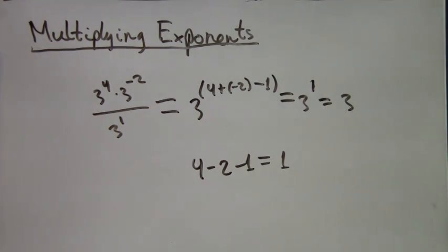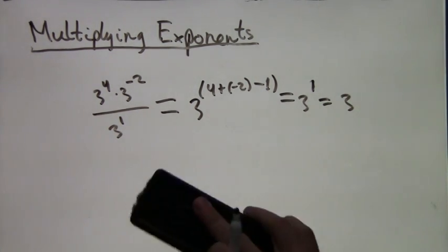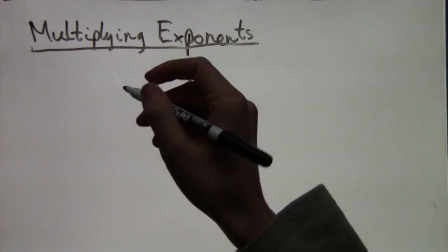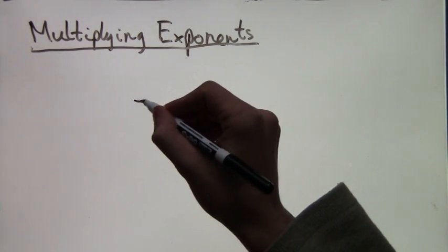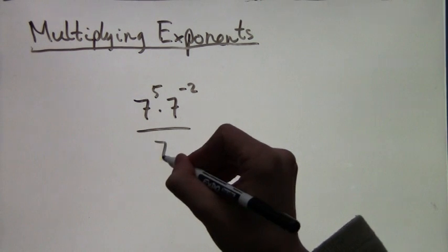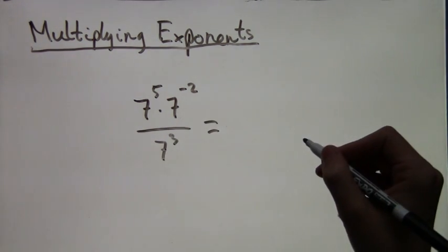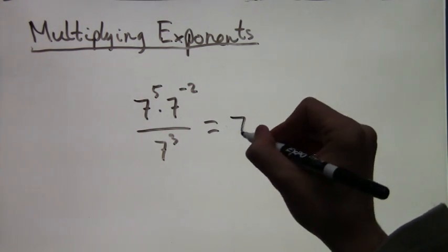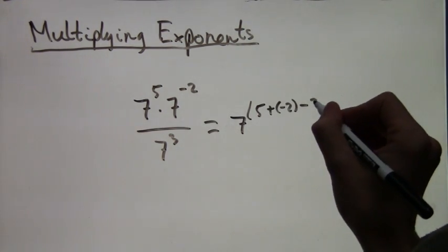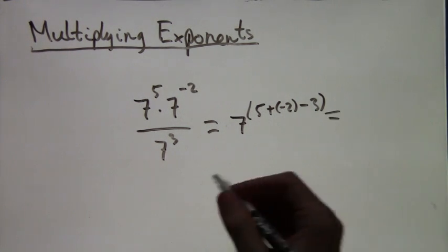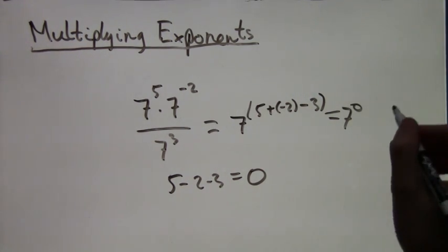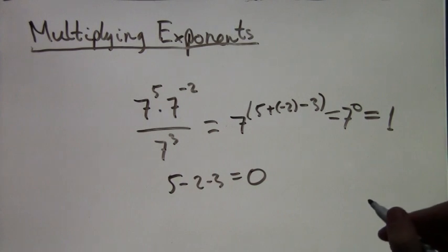You can check this answer on your calculator very easily. Let's do the next example: 7 to the 5 times 7 to the negative 2 over 7 to the 3. What does this equal? We have a 5 on top, then we also have a negative 2 on top and we add that — so plus negative 2 — and on the bottom we have 3 so we subtract 3. 5 plus negative 2 minus 3 equals 0. We get 7 to the 0, and anything to the 0 is just 1, so our answer is 1.